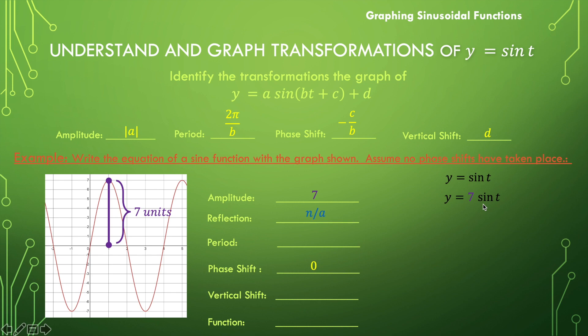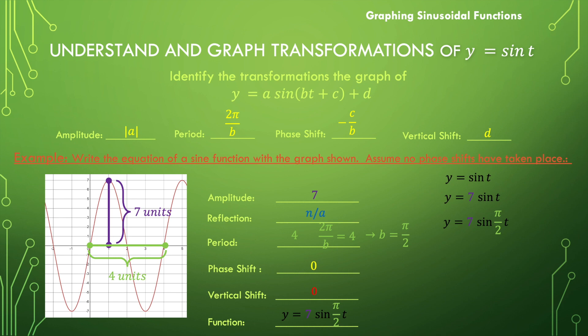Now let's decide the period length — how far on the x-axis does it take to complete one full cycle. We can see that's going to be 4 units — one full hill and one full valley. Knowing the period length is 4, we solve for b: 2π divided by b equals 4, so b equals π over 2. We implement that into our equation. Because our midline is right on the x-axis there's no vertical shift, so our function is y equals 7 sine of (π/2)t.